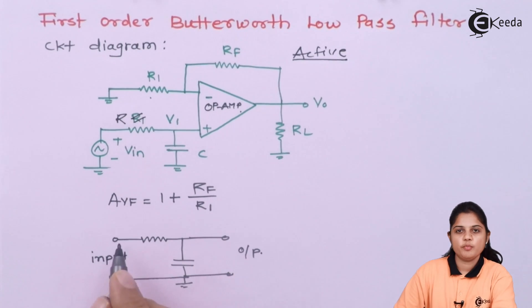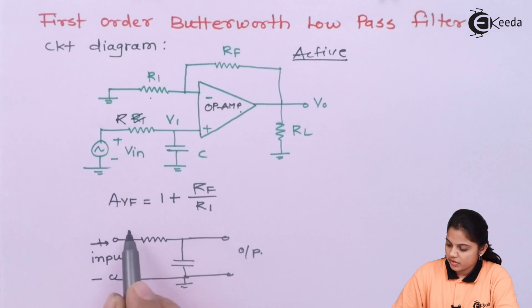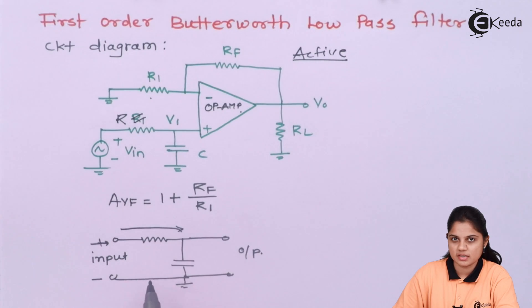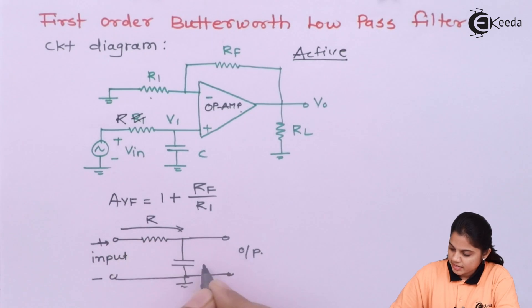Now your input will be a voltage supply given to this. If you are providing a voltage supply, positive and negative, if the voltage supply is given, there will be some current which flows through this circuit or this resistance, which will cause some voltage to drop at this resistance. I will name this as R and C.